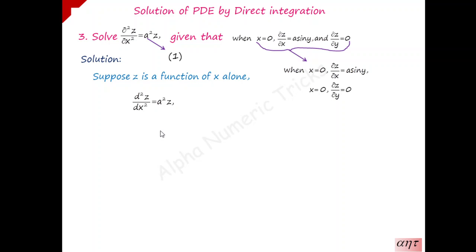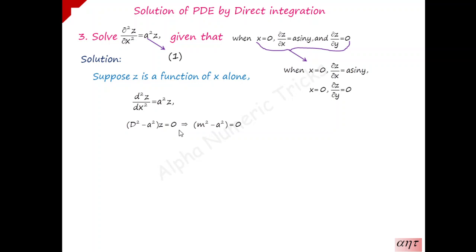First we write the operator form. The operator d/dx is taken as capital D. Since we have a second-order term, we have D² applied to z. Taking −a²z to the left-hand side gives (D² − a²)z = 0. Now the auxiliary equation is written by replacing D with m, so m² − a² = 0. The right-hand side is zero since no forcing term is present.